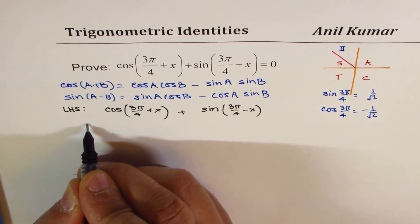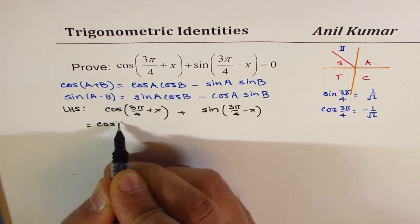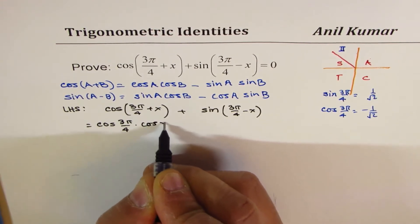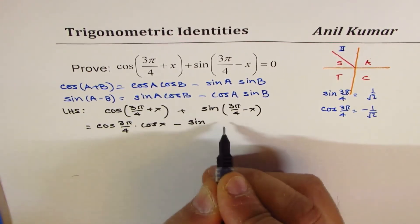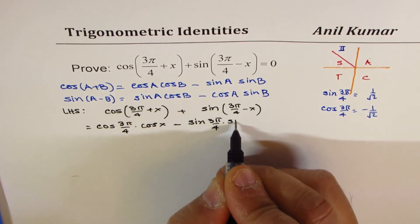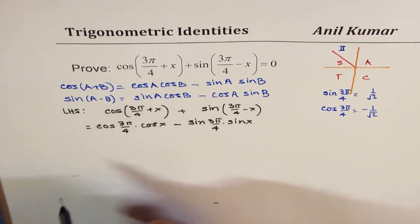Now, applying this formula, we could write this as cos(3π/4)cos(x) - sin(3π/4)sin(x). So that is the expansion of the first part.